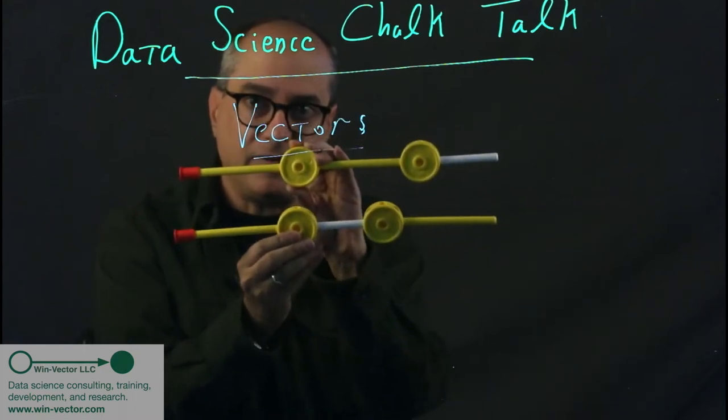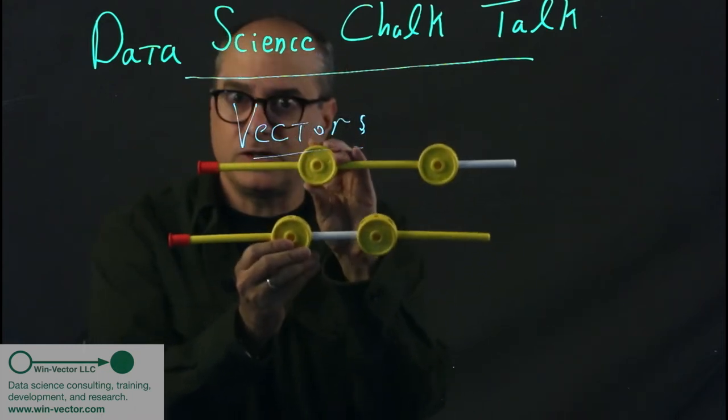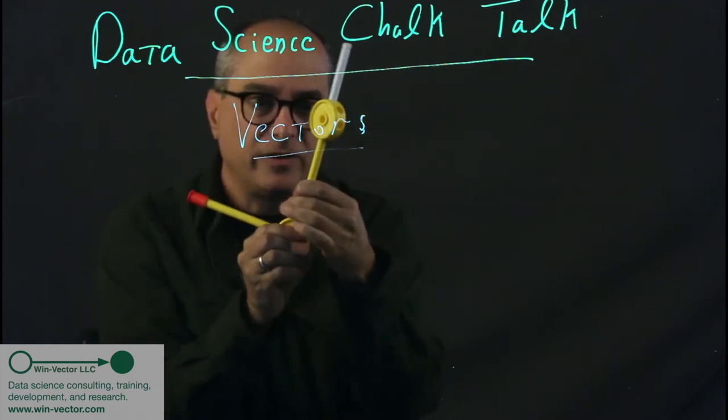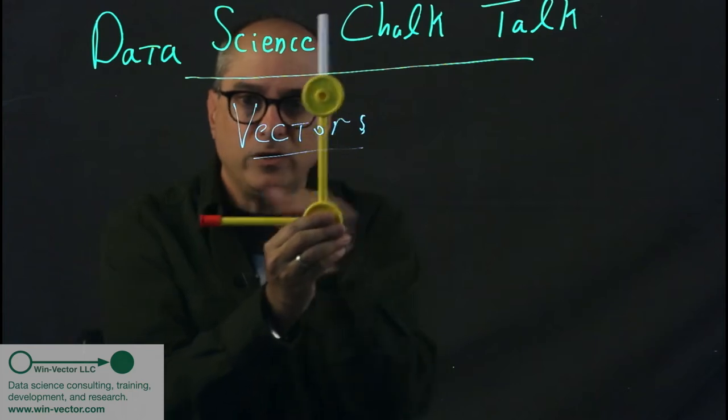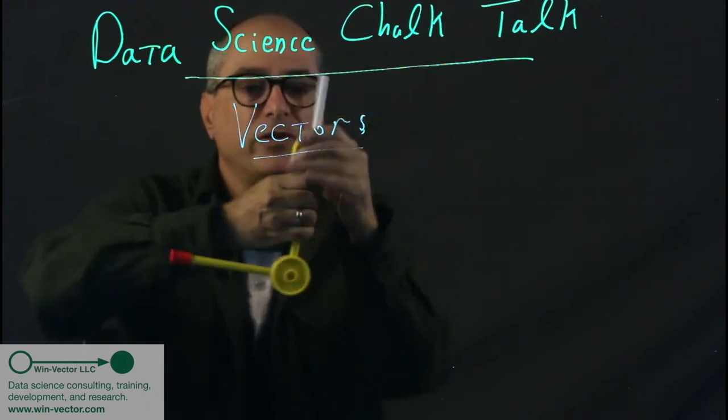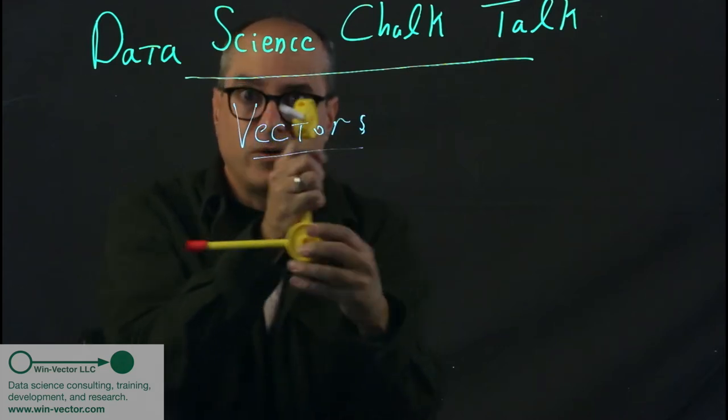We now have essentially the computer science version of a vector. The geometric version is each coordinate is at right angles to the previous coordinate. So we used horizontal for this, it's no longer available to use, we're going to use vertical.